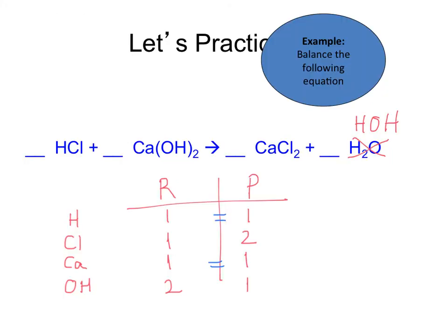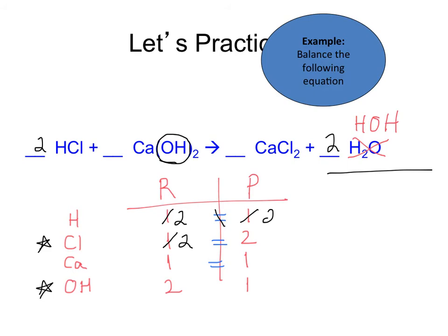Let's do a practice together. We have this double replacement reaction. Notice that I have changed the water to HOH because I noticed there was a hydroxide ion on the left, and I counted my atoms up. The hydrogens and calcium seem to be equal initially, and it is the chlorine and the hydroxide that I need to fix. So I am going to put a 2 in front of the HCl — that changes my chlorine number to 2 and my hydrogen number to 2 as well, which now makes those unequal. But now the chlorines are equal. So to fix the hydrogens, I am going to add a 2 on the other side, making 2 hydrogens and 2 hydroxides, finally equaling out that last set of atoms. It is now balanced.